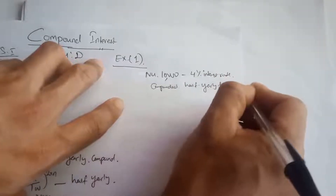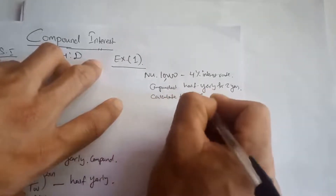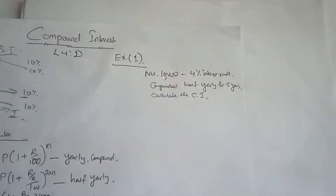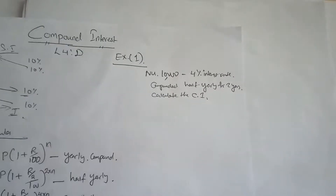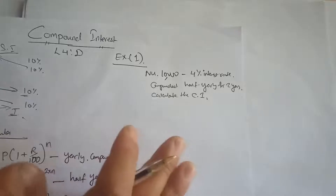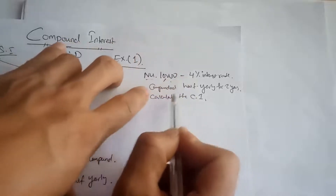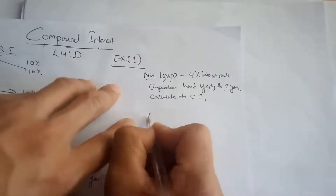The loan is for 2 years. Calculate the compound interest. Since it is compounded half-yearly, we use the half-yearly formula where the rate is divided by 2 and number of years is multiplied by 2. So amount equals principal times 1 plus R over 200, raised to 2N.